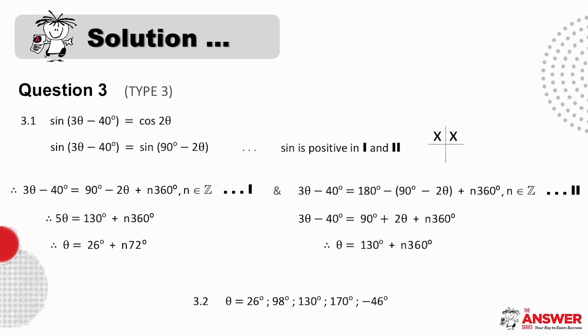Question 3 is a type 3 example, a ratio equaling a co-ratio. I prefer to always change the right-hand side ratio, but which one you change is up to you. Once you've changed the ratios to be the same, then you continue as if for a type 2 equation. This is our angle we are solving for, and this is our reference angle. Sine is positive in the first and second quads, and so these are our two equations, which then lead to the general solutions. 3.2 then asks us to find all possible solutions for theta in the interval minus 90 to 180. Using the same method as before, with different values for n for each of the general solutions, this time there are five valid solutions for theta.